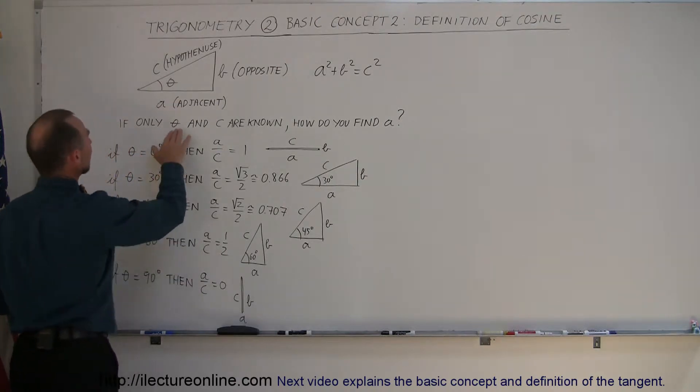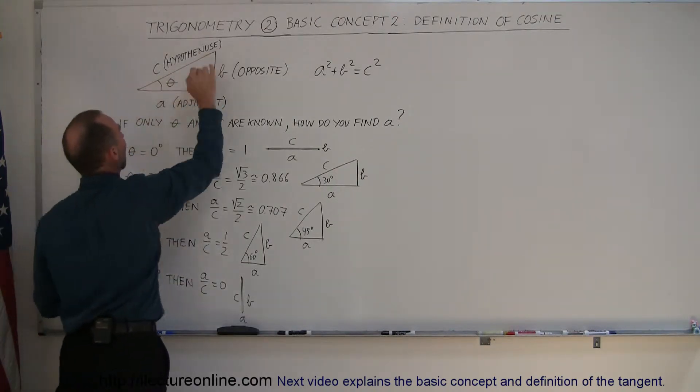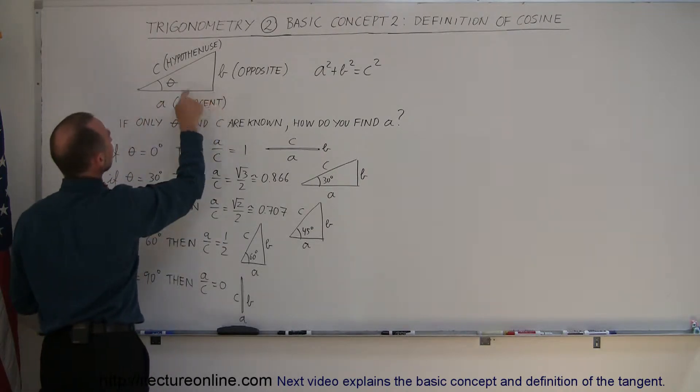Well, let's say that theta is known, the angle is known, and we know what the length of the hypotenuse is. How do we find the adjacent side?